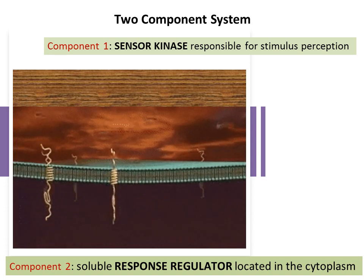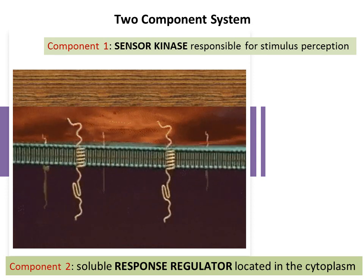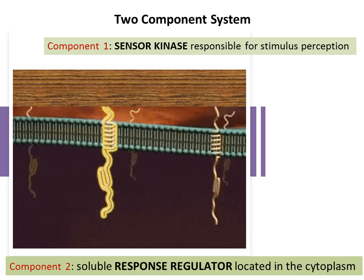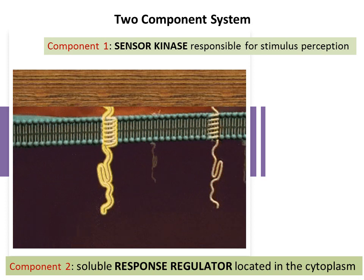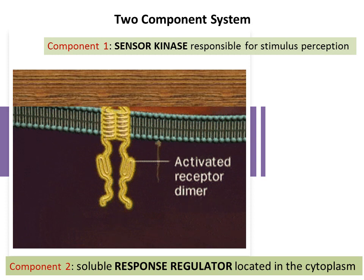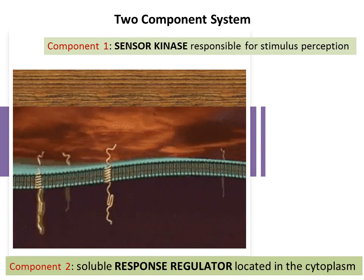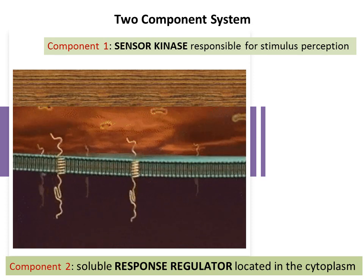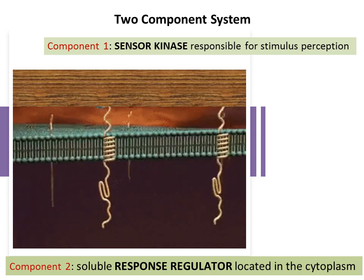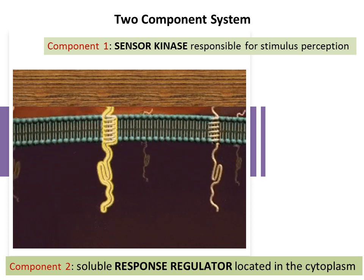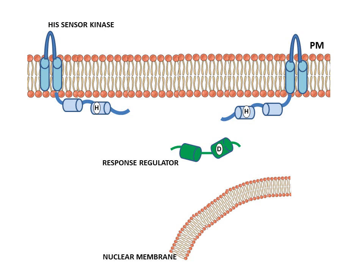The two-component system has a sensor kinase — a protein capable of phosphorylating something. This is a membrane-bound protein with a hydrophobic domain lying in the membrane and hydrophilic N-terminal and C-terminal portions on either side. It has an input domain that receives the signal and a transmitter domain on the cytoplasmic side that can transmit the signal to component 2 — a soluble response regulator found in the cytoplasm.